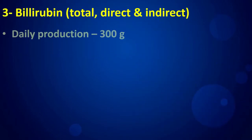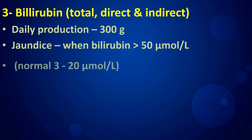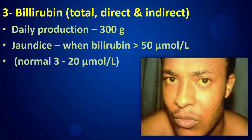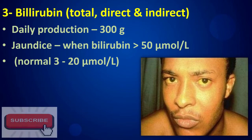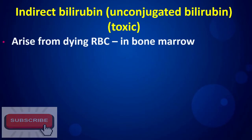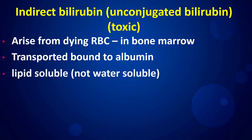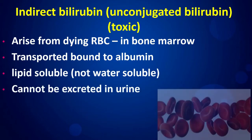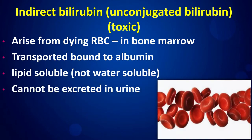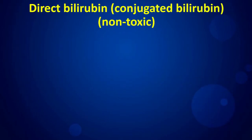Daily bilirubin production is approximately 300 milligrams. Jaundice occurs when bilirubin levels exceed 50 micromoles per liter. Indirect bilirubin arises from dying red blood cells in the bone marrow and is transported bound to albumin. It is lipid-soluble, not water-soluble, and therefore cannot be excreted in urine.